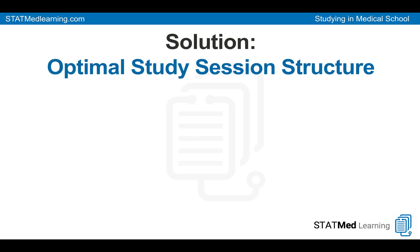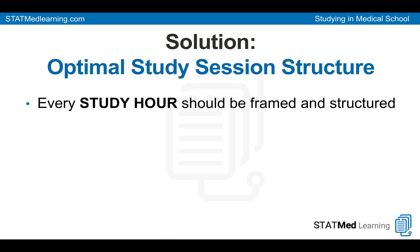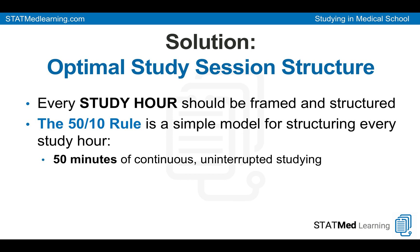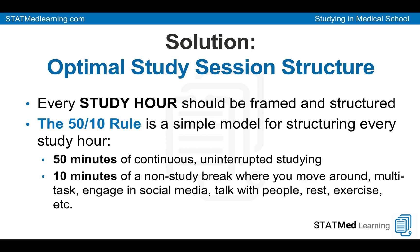So when we think about how to solve this kind of problem, we have to start with something really fundamental: an optimal study session structure. Every study hour should be framed in structure. This is just one way to do it — the 50-10 rule — a simple model for structuring every hour where you have 50 minutes of continuous, uninterrupted study. You can still toggle between study activities; it doesn't have to be the same thing. And then 10 minutes of a non-study break where you move around, multitask, engage in social media, talk to people, rest, exercise, whatever.